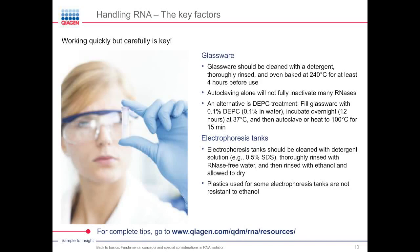If you're using glassware, clean it with detergent, rinse it, and oven-bake at 240 degrees for at least four hours before use, because autoclaving alone will not fully inactivate RNase. An alternative treatment is DEPC treatment. When running electrophoresis afterwards, tanks should be cleaned with detergent, thoroughly rinsed with RNase-free water, then with ethanol, and allowed to dry. Note that plastic electrophoresis tanks are not resistant to ethanol. Complete tips are available in the resources section on QIAGEN.com.